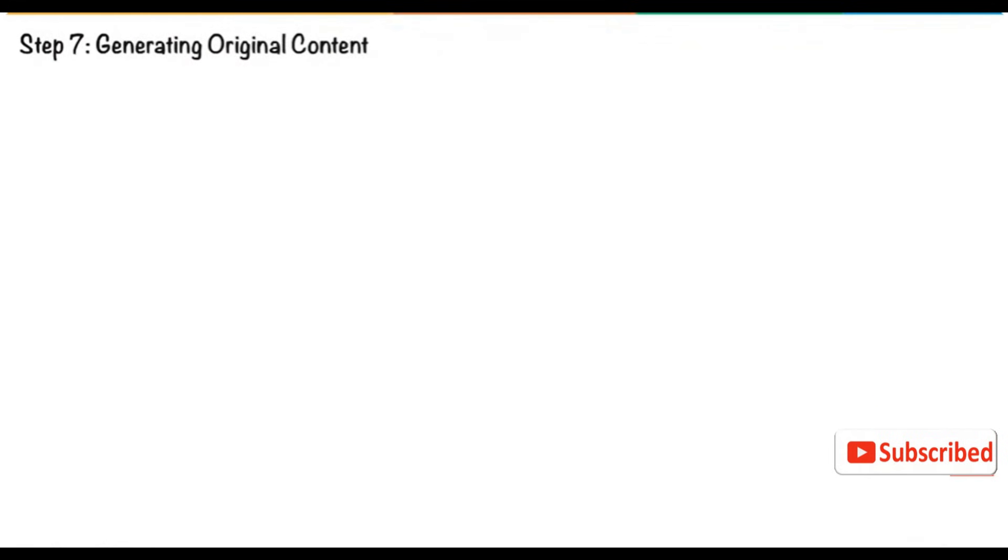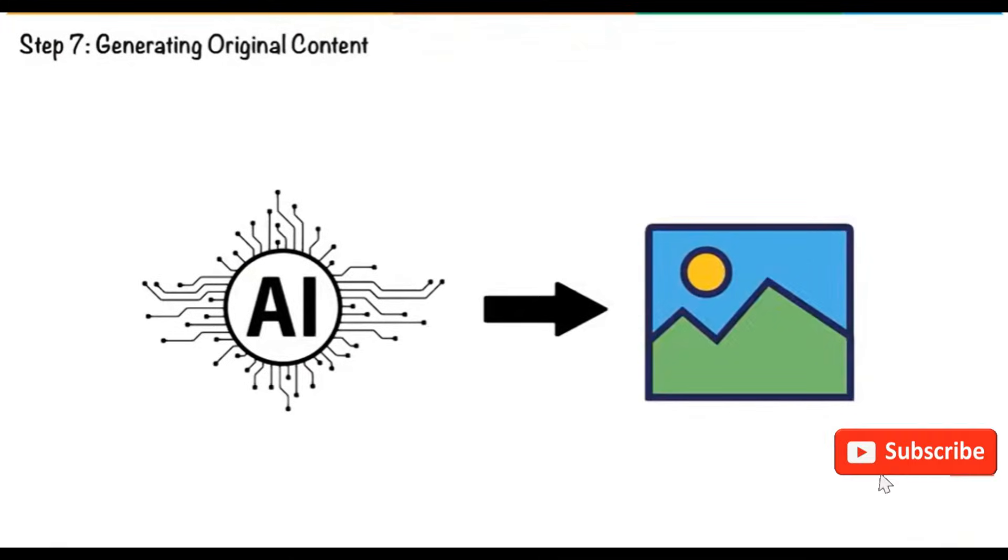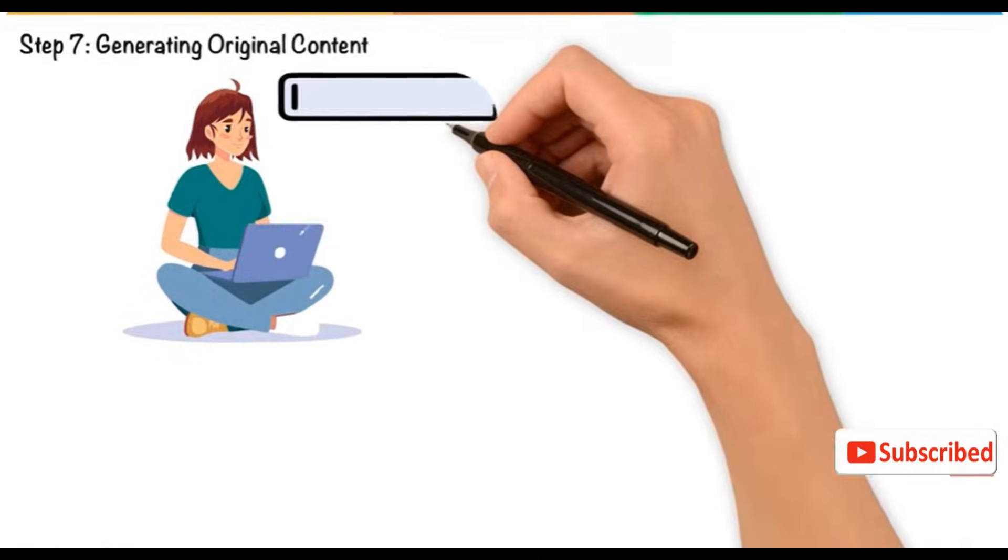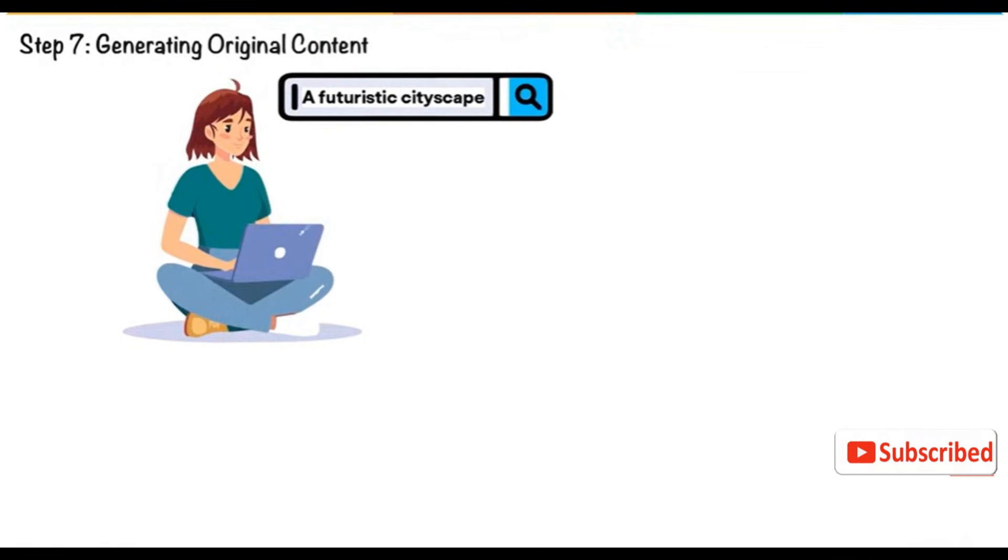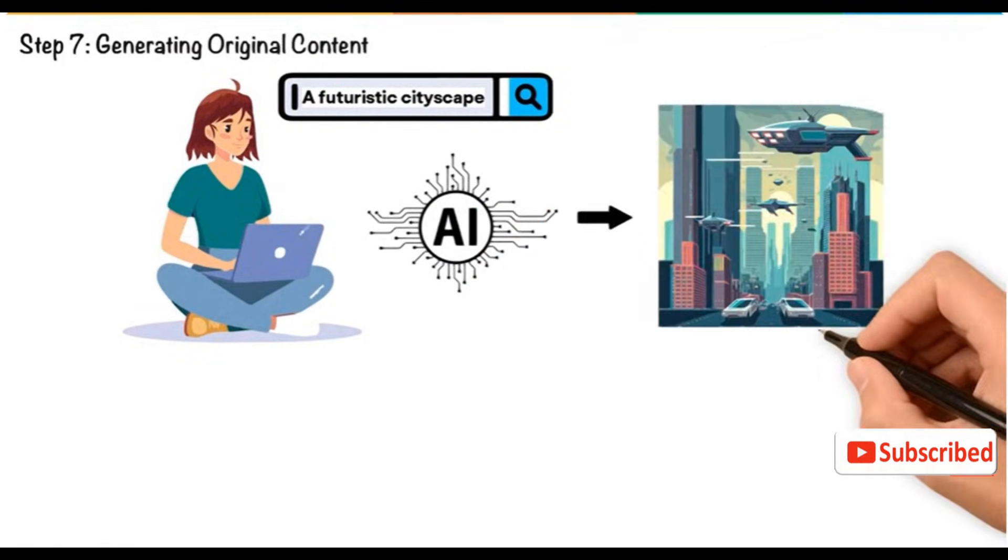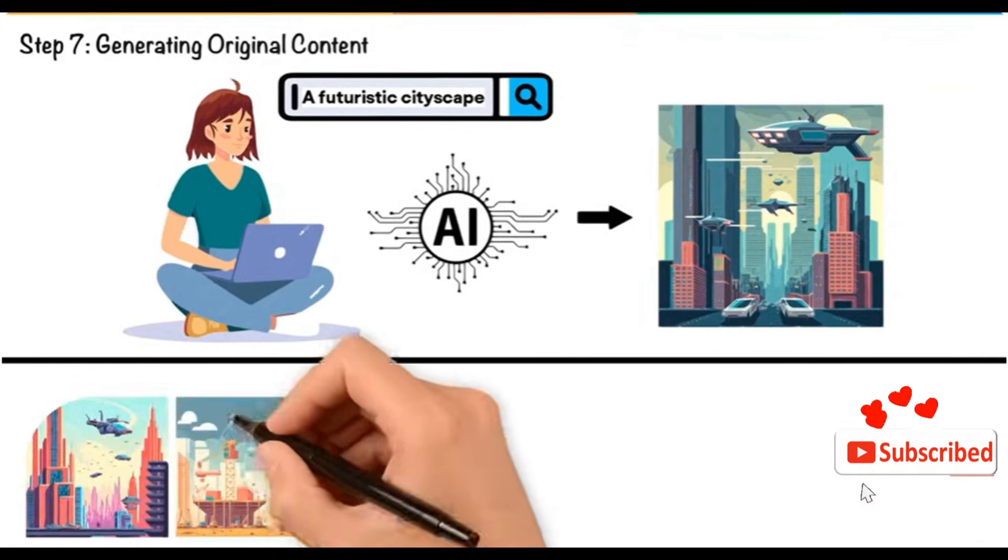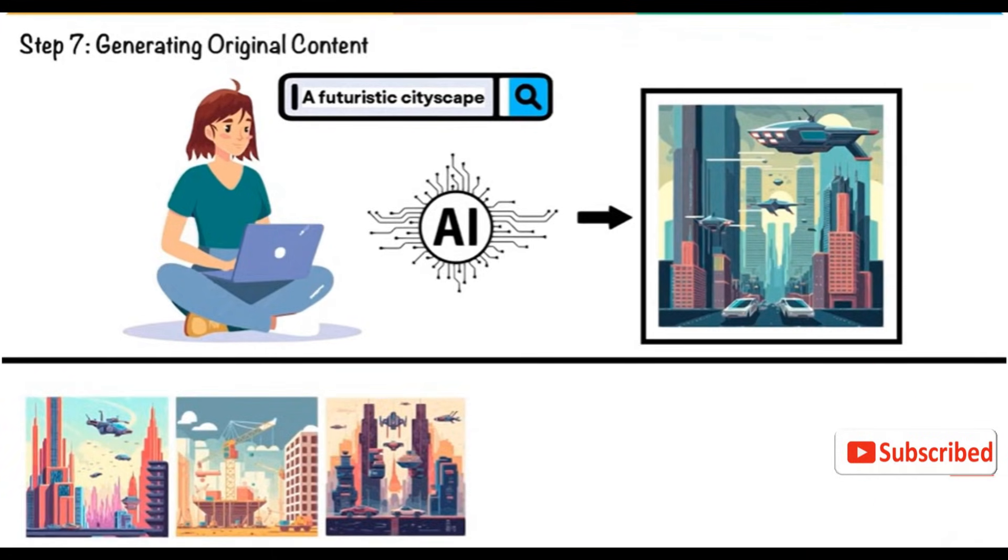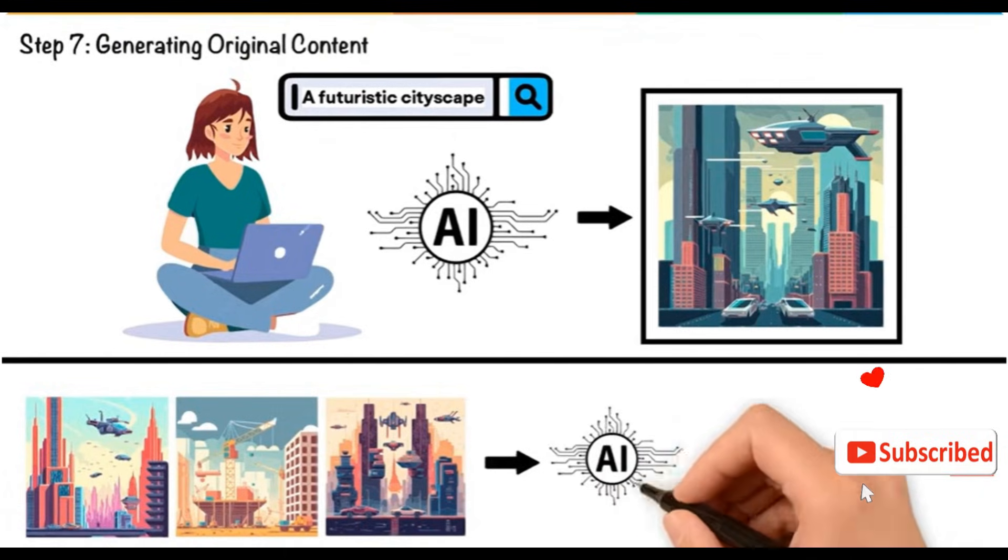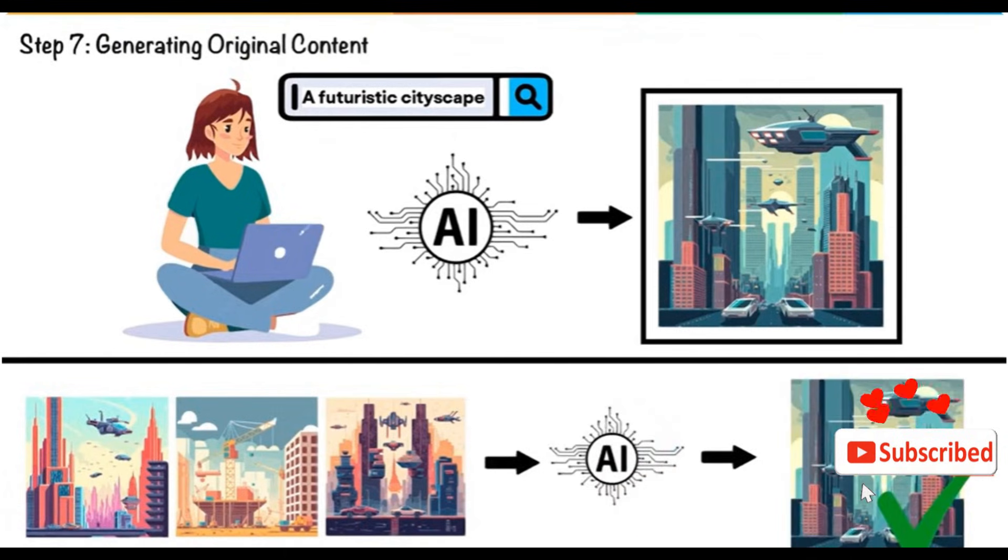Generating Original Content: Once trained, the model can generate original images. For example, Tina might describe a futuristic cityscape and the AI would produce a unique image based on what it learned. The generated image isn't just a copy of past data, but an entirely new creation showcasing the AI's ability to combine learned patterns and creativity.